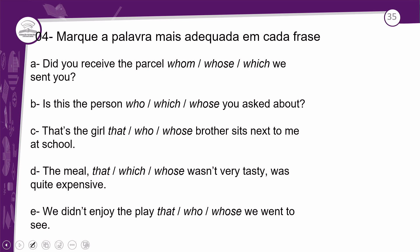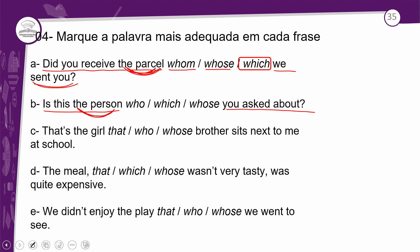Question 4 — mark the most appropriate word in each sentence. Item A: 'Did you receive the parcel ___ we sent you?' We're talking about 'parcel' — a thing, not a person and not possession — so it can only be 'which.' Item B: 'Is this the person ___ you asked about?' We're talking about a person. It could be 'who' or 'whose' — but 'whose' indicates possession and there's no possession here. So only 'who' is correct. This sentence in B is also a Defined Clause.